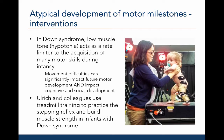Many researchers have investigated early motor delays in different developmental disabilities. Infants with Down syndrome are found to have low muscle tone, or hypotonia, which is a rate limiter to the acquisition of many motor skills during infancy. Movement difficulties in an infant with Down syndrome can not only significantly impact future motor development, but also negatively impact cognitive and social development. Ulrich and colleagues used treadmill training to practice the stepping reflex and build muscle strength, which improves the onset and quality of independent walking in infants with Down syndrome.